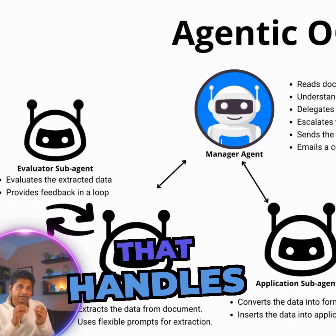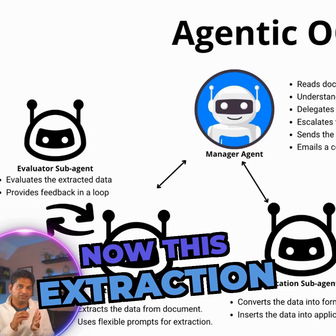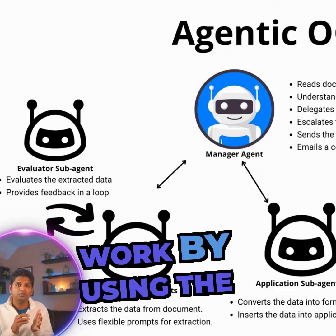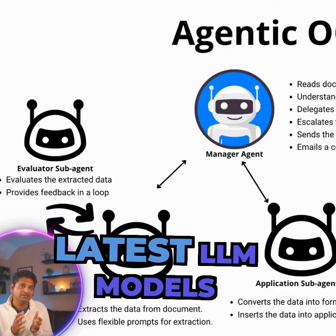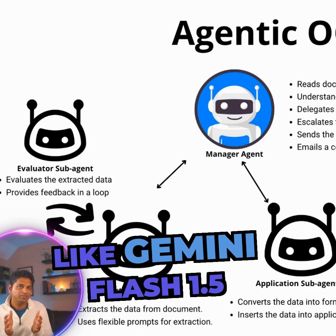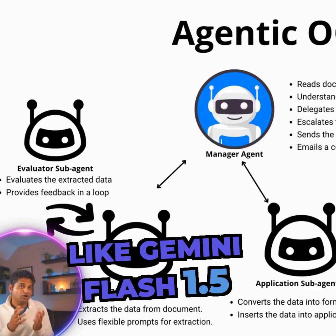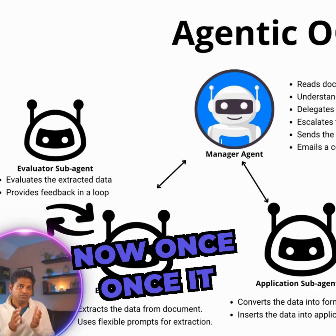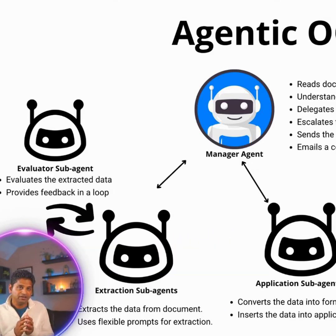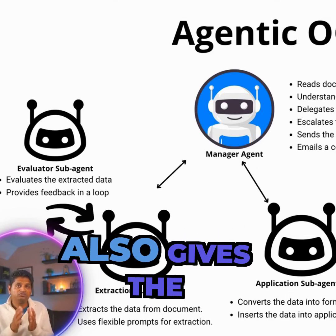Now these extraction sub-agents work by using the latest LLM models like Gemini Flash 1.5. Once it extracts the data, it extracts the data in a JSON format, and it also gives the confidence scores.